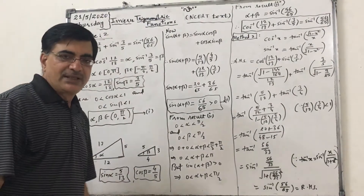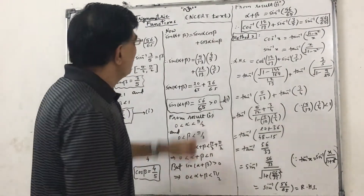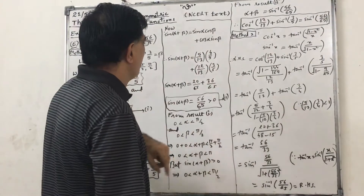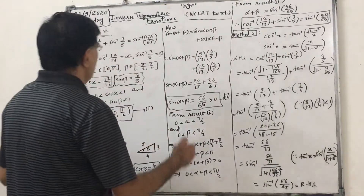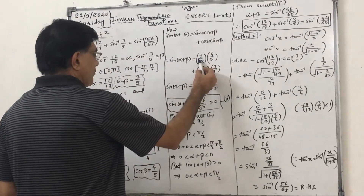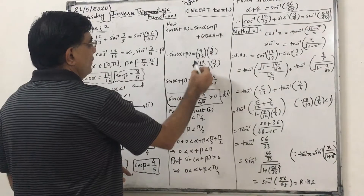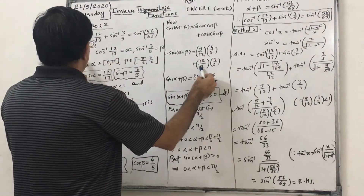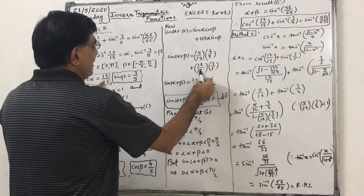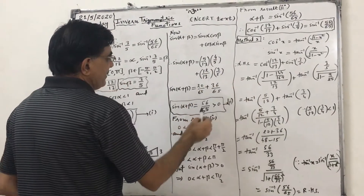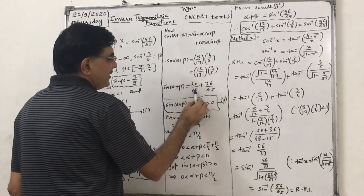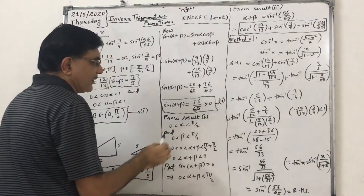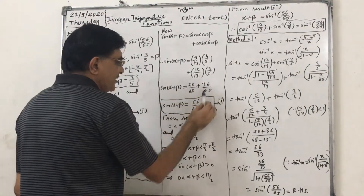Now we need sin inverse, so applying sin of alpha plus beta, that is sin alpha cos beta plus cos alpha sin beta. Putting the values: sin alpha is 5 by 13, cos beta is 4 by 5, plus cos alpha that is 12 by 13, and sin beta that is 3 by 5. So this will be 20 upon 65 plus 36 upon 65, so finally 56 by 65.